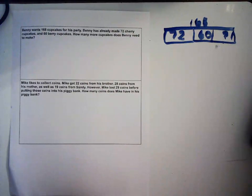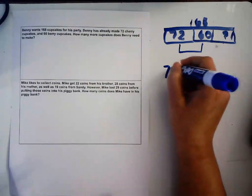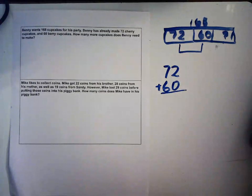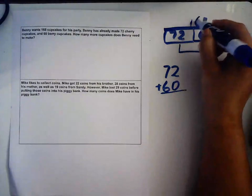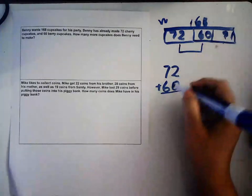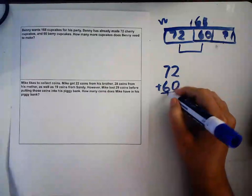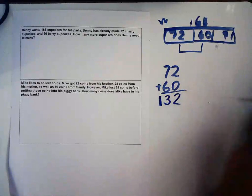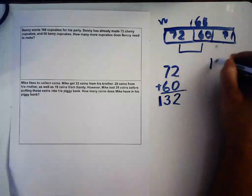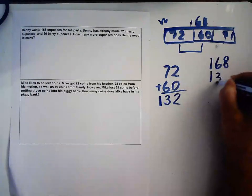Let's look at the first step. He has 168 total, but he has already made 72 cherry cupcakes and 60 berry cupcakes. I'm going to add my 72 plus my 60. You can see that 168 is my whole number and these are three parts. I'm going to add these parts and then I'm going to subtract. Two, then 7 plus 6 is 13. That's 132. Then I'm going to subtract 132 from 168 to find out how many he has left.